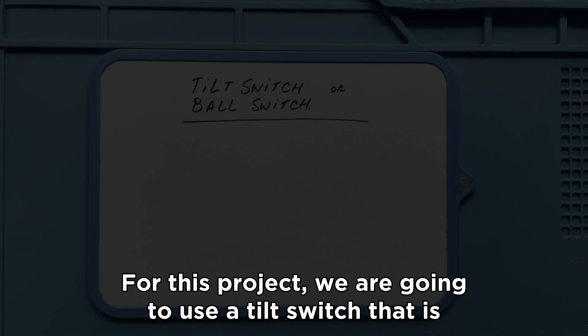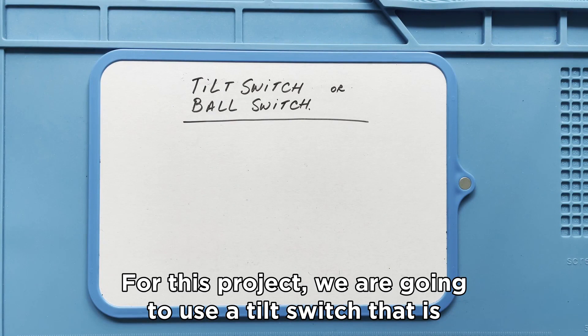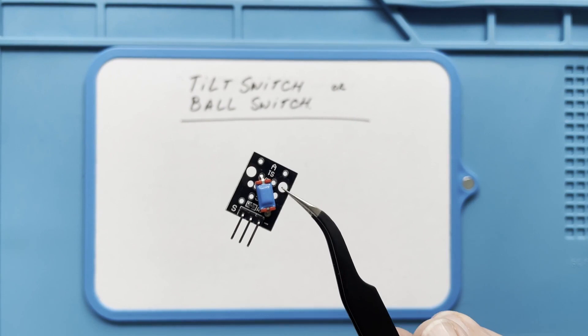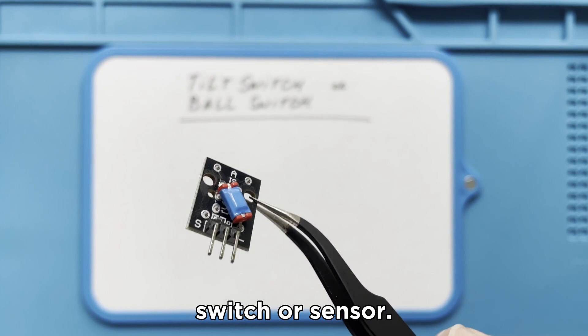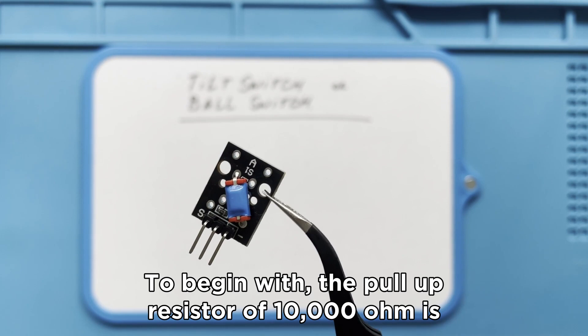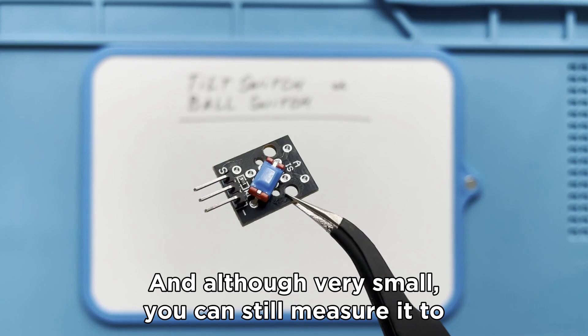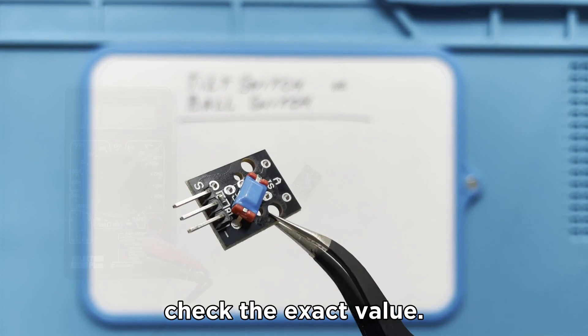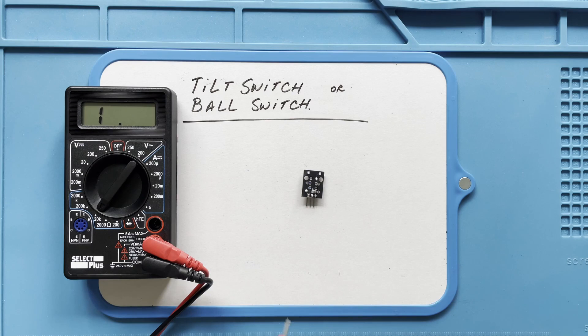For this project we are going to use a tilt switch that is soldered on a small print plate. There are multiple advantages using this type of switch or sensor. To begin with, the pull-up resistor of 10,000 ohm is already integrated on the board. And although very small, you can still measure it to check the exact value. You can see that our resistor is exactly 10,000 ohm.